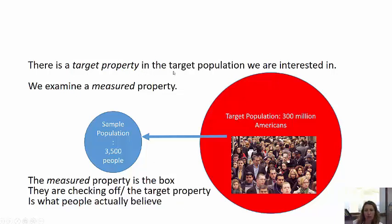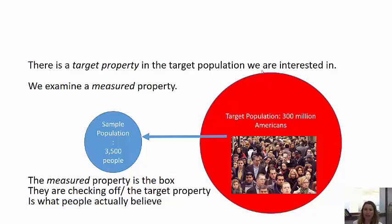There's a target property in the target population and the measured property. Here's your target population — 300 million Americans. Here's your sample population — about 3,500 people. That's about the number that Gallup polls take when they're generalizing about all Americans. There's a difference between the target property and the measured property. The target property is what we're trying to get at — suppose we're trying to figure out what percentage of Americans are obese. The target population is Americans; the target property is obeseness.